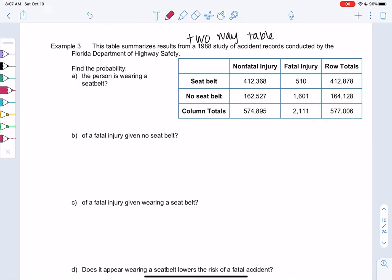Let's find the probability the person is wearing a seatbelt, so no givens yet, just probability of a seatbelt. We'll take everyone with a seatbelt, go to the seatbelt row and go to the total, and then we do the total total in the bottom corner. So we get 412,878 with a seatbelt out of 577,006 total.